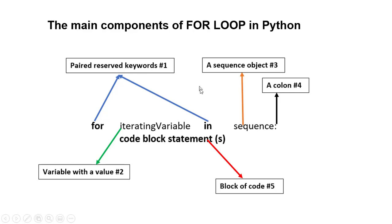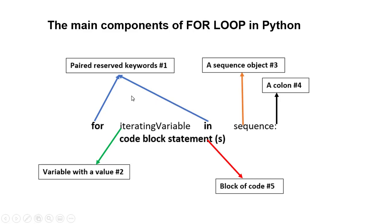What we have on the screen explains the process and the components of a for loop in Python. We have five different components and they will all be explained here. To write a for loop in Python we use the keyword 'for', which is a reserved word, and we use it with another reserved word called 'in'. So we use both 'for' and 'in' in our for loop code.